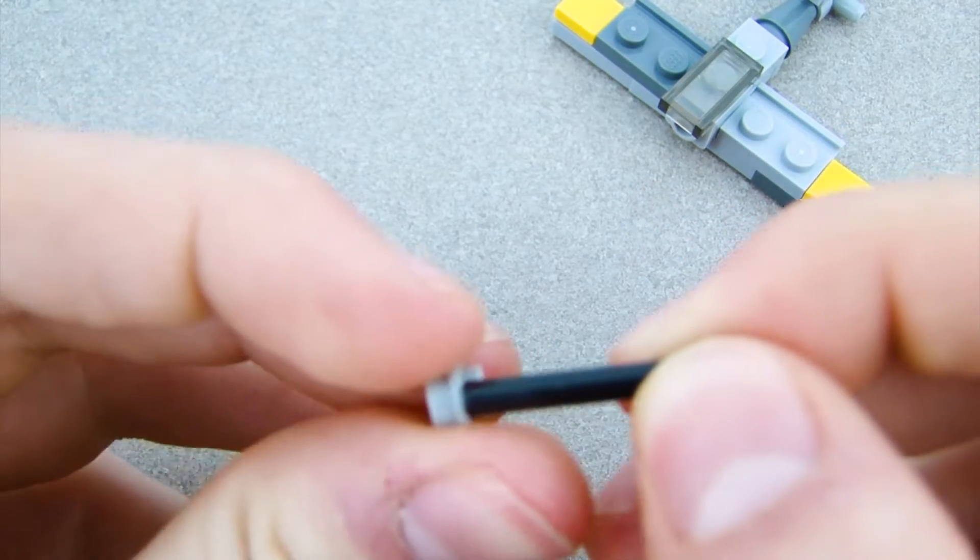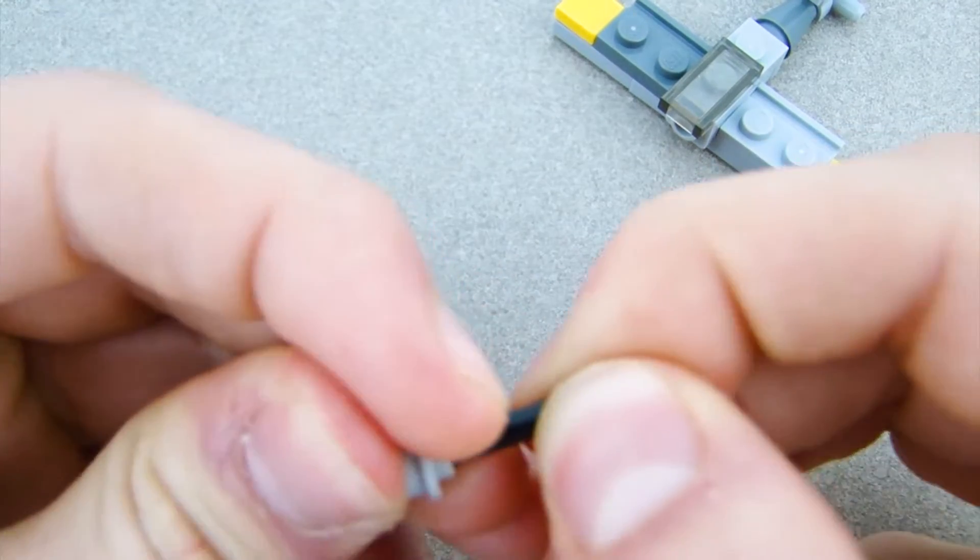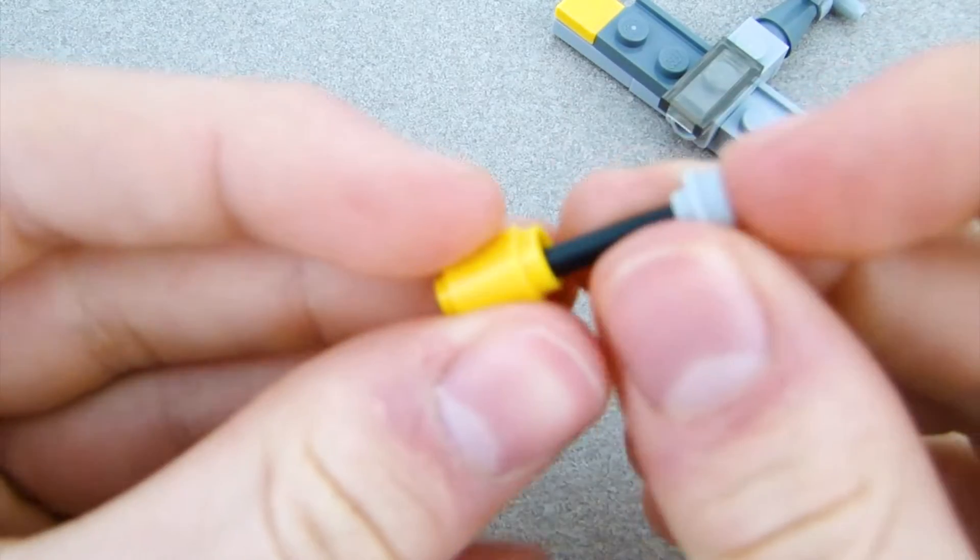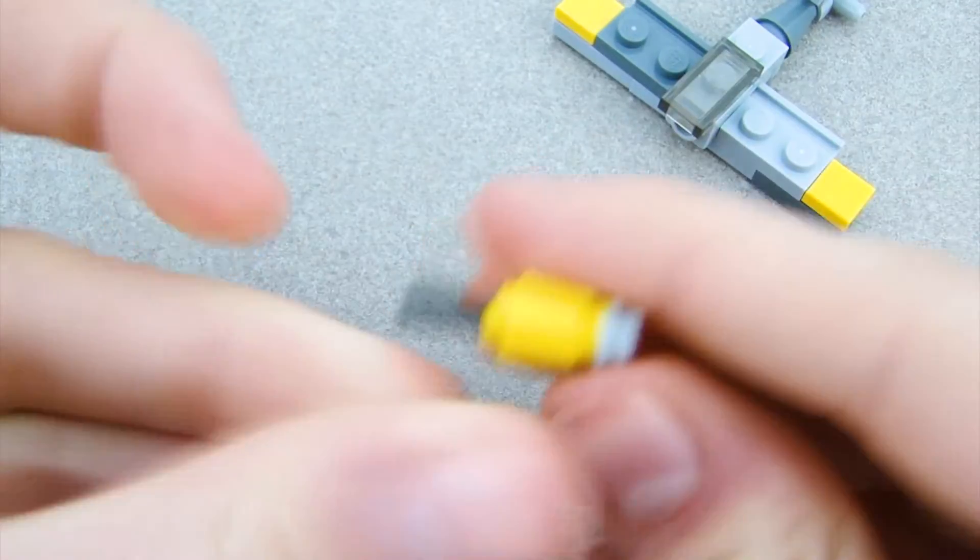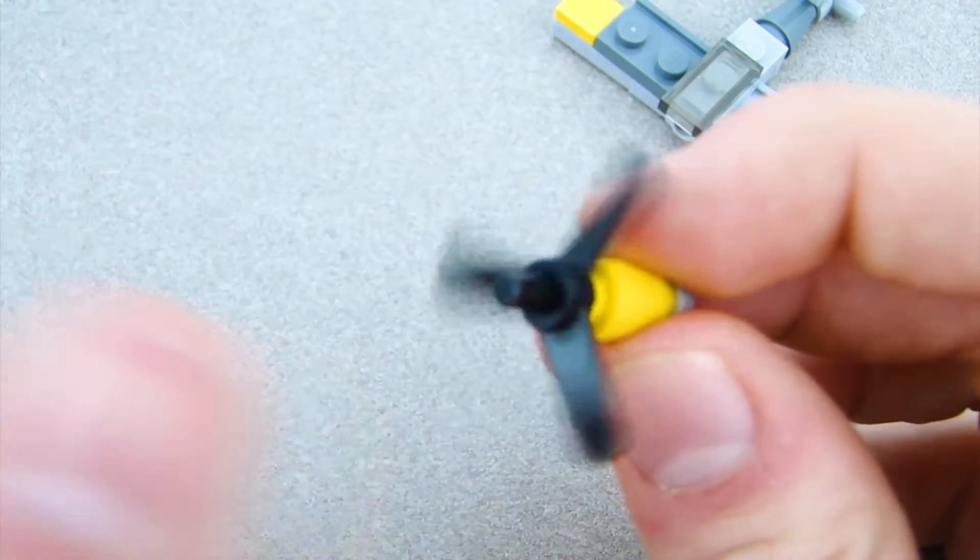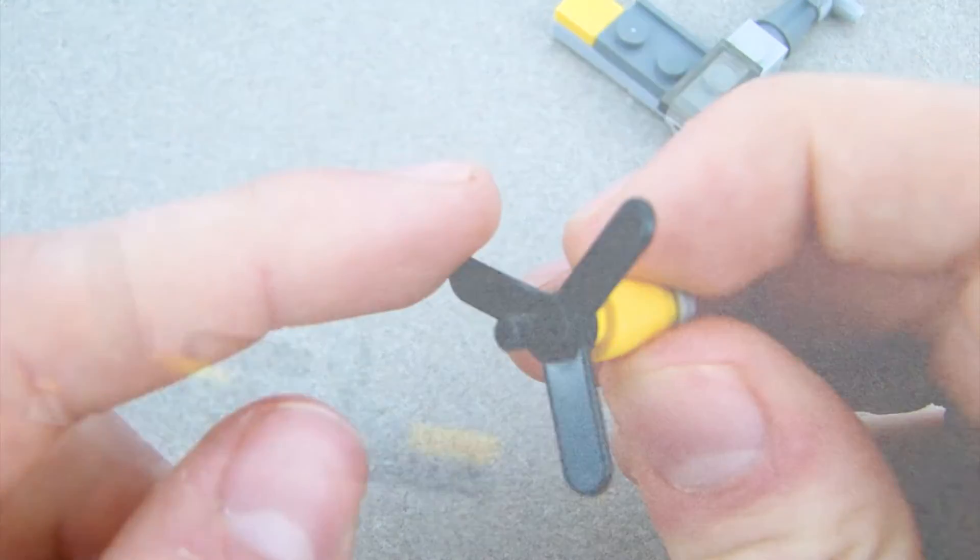Should clip on. And now just put this down and get this bar piece right here, 1x3 bar. Put a light bluish gray stud on the end, just like that. Pretty easy. And then slide this cone onto there, and then put this propeller on there. It should freely spin, as I showed you earlier.